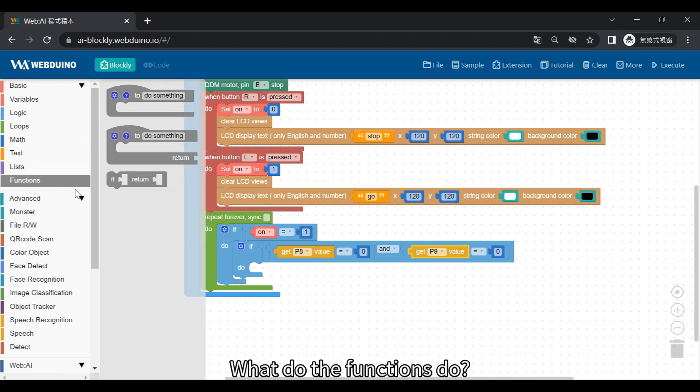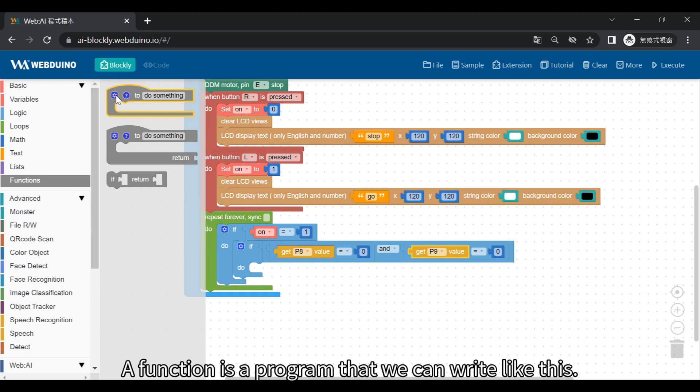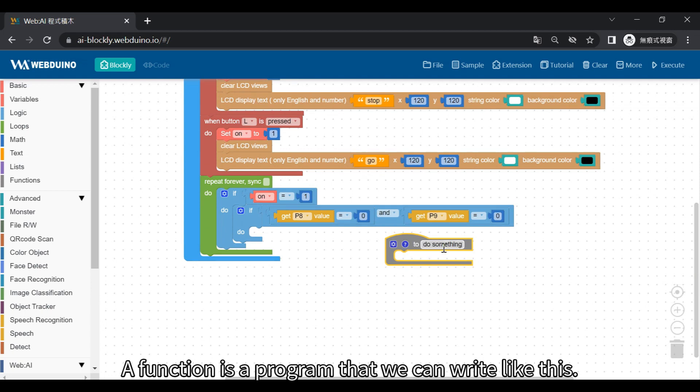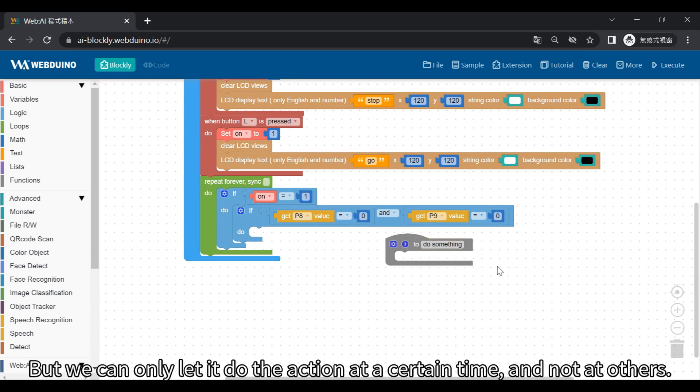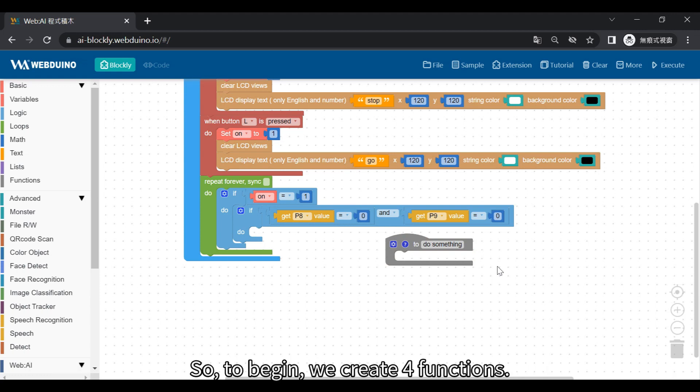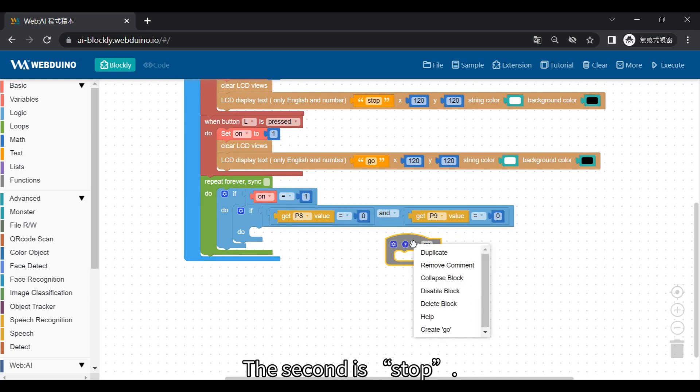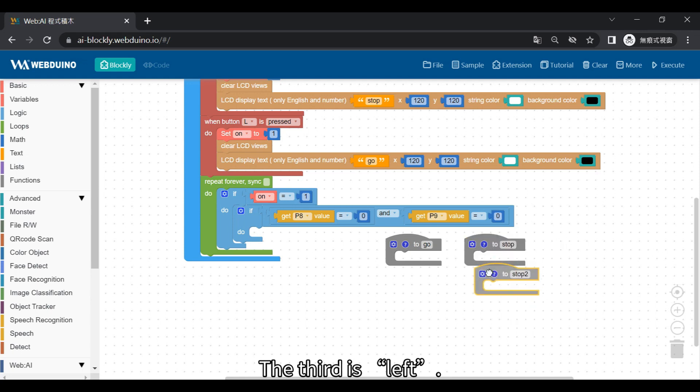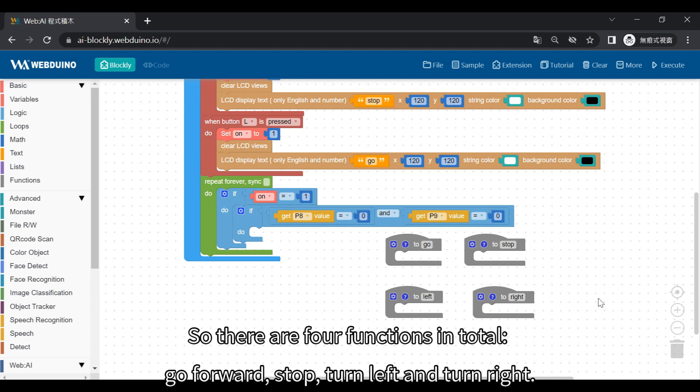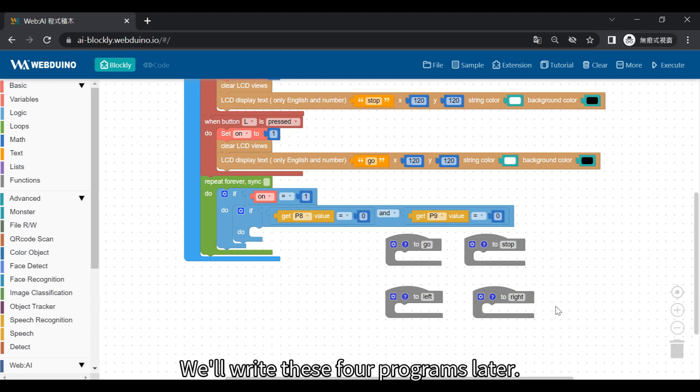What do the functions do? A function is a program that we can write like this. But we can only let it do the action at a certain time, and not at others. A bit like a package. So, to begin, we create four functions. The first is Go. The second is Stop. The third is Left. The fourth is Right. So, there are four functions in total: Go Forward, Stop, Turn Left, and Turn Right.